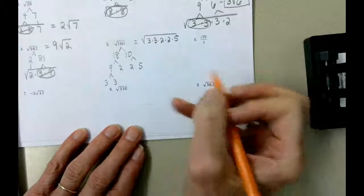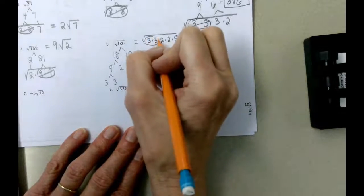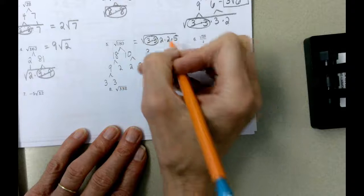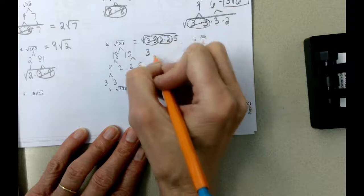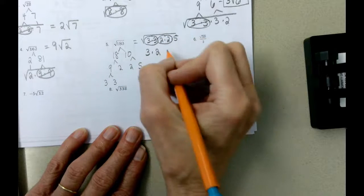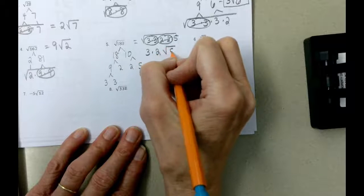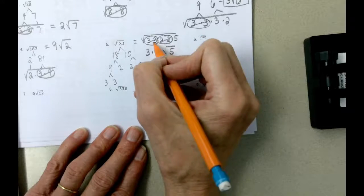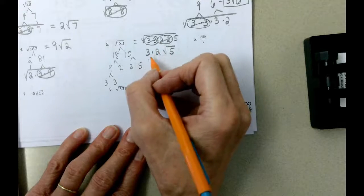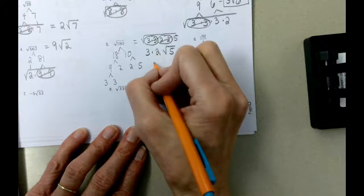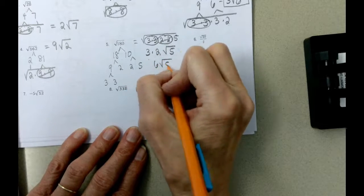And what we need is 2 of the same value to take out 1, 2 of the same value to take out 1, and then we still have that single square root of 5. But we were able to take out a 3, we were able to take out a 2, so to finish, we're going to multiply 3 times 2 is 6, square root of 5.